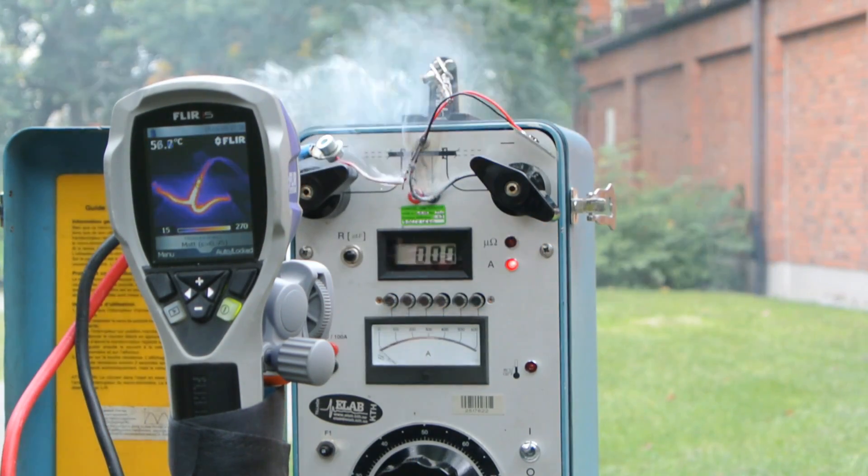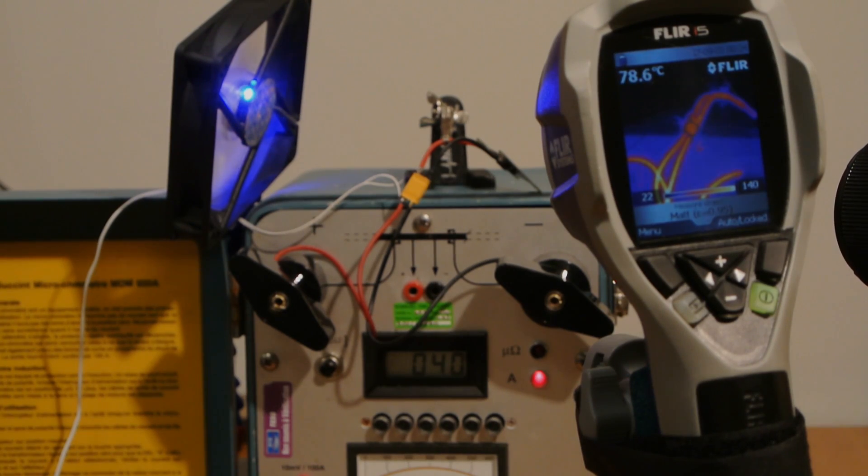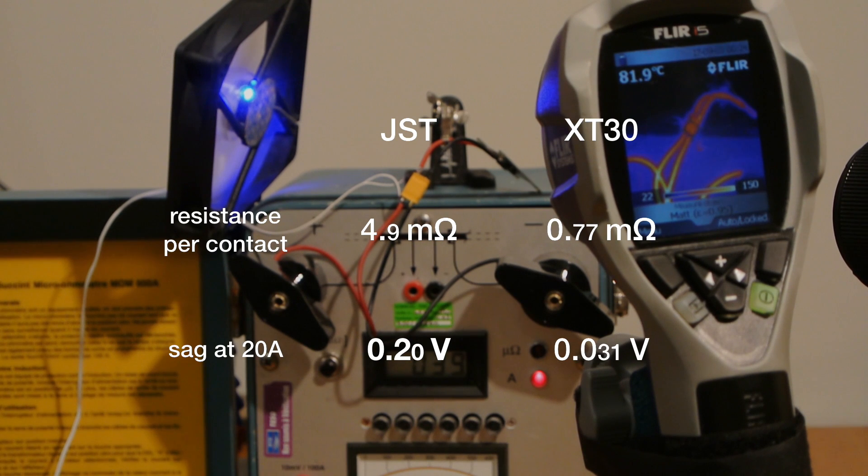But even at a little lower current, like 20 amps that the JST can handle, you might prefer the XT30. And that's because of the contact resistance.